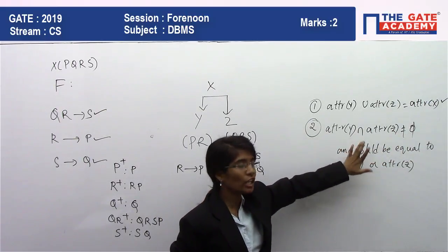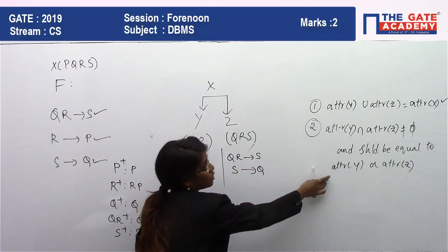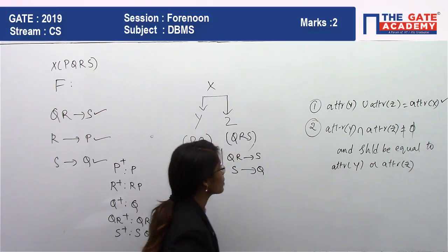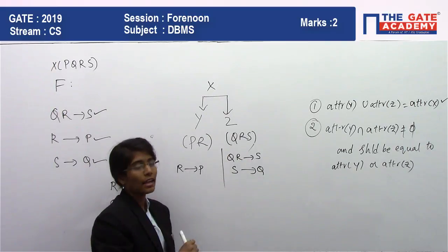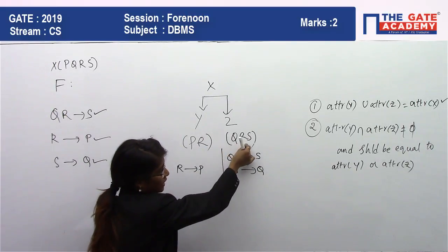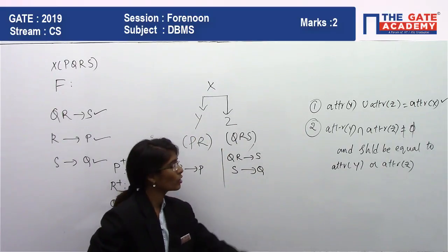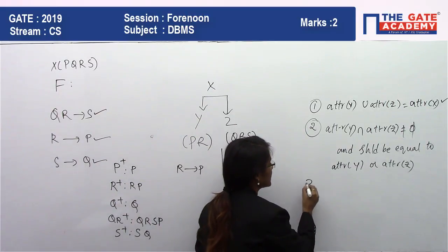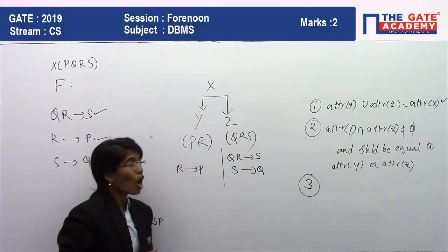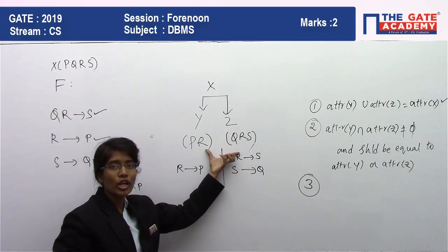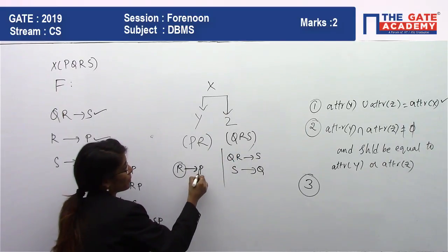Rule 2: the intersection of attributes of Y and Z must not be empty and must be a subset of one of the decomposed tables. The common attribute is R, which belongs to both Y and Z. Rule 3: the common column must act as a primary key in one of the tables. Here R → P, so R acts as a key in Y.